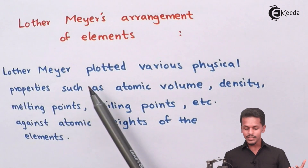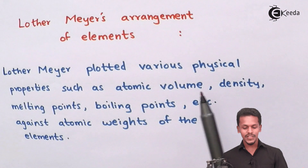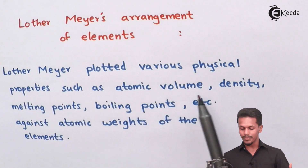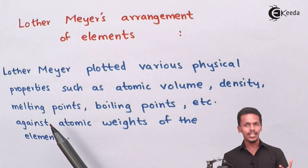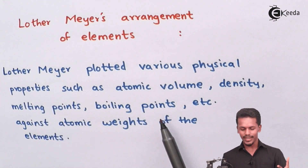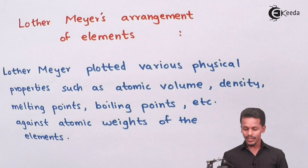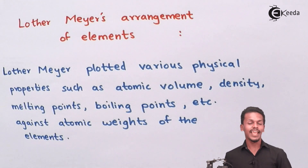Lothar Meyer plotted various physical properties such as atomic volume, density, melting point, and boiling point against the atomic weight of the elements.